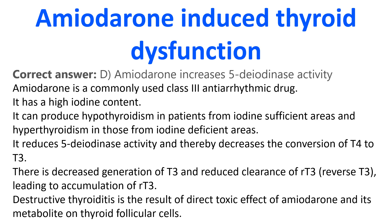Amiodarone is a commonly used class 3 antiarrhythmic drug with a high iodine content. It can produce hypothyroidism in patients from iodine sufficient areas and hyperthyroidism in those from iodine deficient areas. It reduces 5-deiodinase activity and thereby decreases the conversion of T4 to T3. There is decreased generation of T3 and reduced clearance of reverse T3, leading to accumulation of RT3. Destructive thyroiditis is the result of the direct toxic effect of amiodarone and its metabolite on thyroid follicular cells.